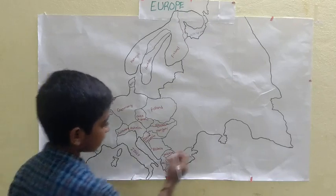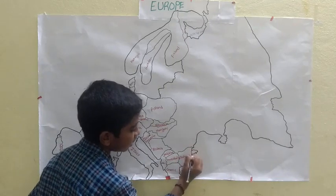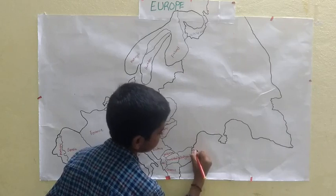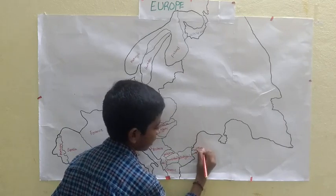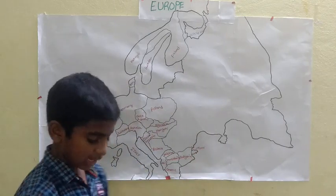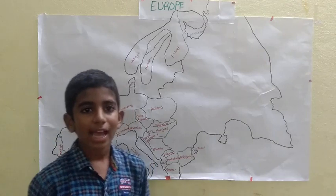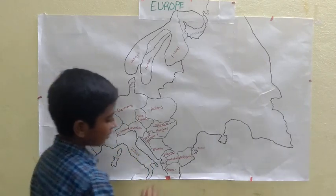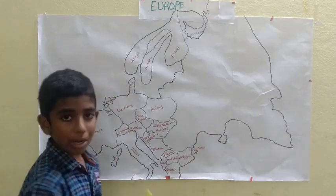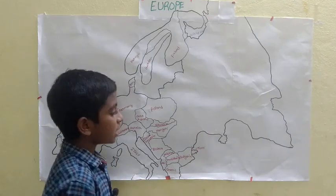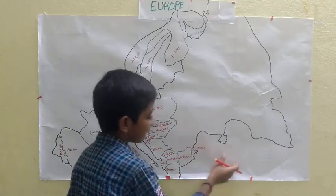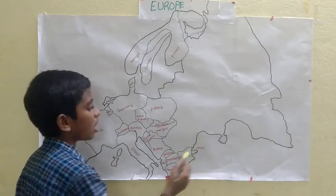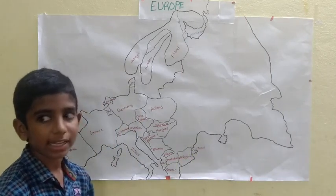Going to the side we see Turkey. Turkey has both European and Asian portions. The bigger part of Turkey is in Asia, and a small part of Turkey is located in Europe.